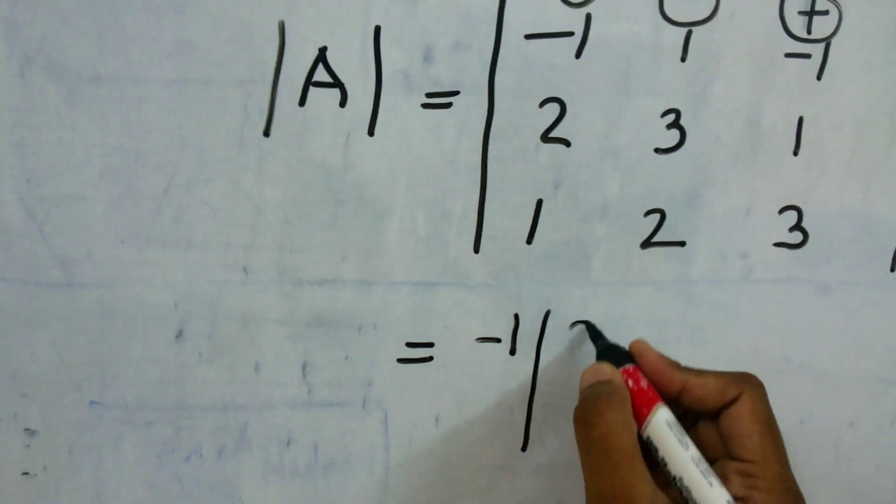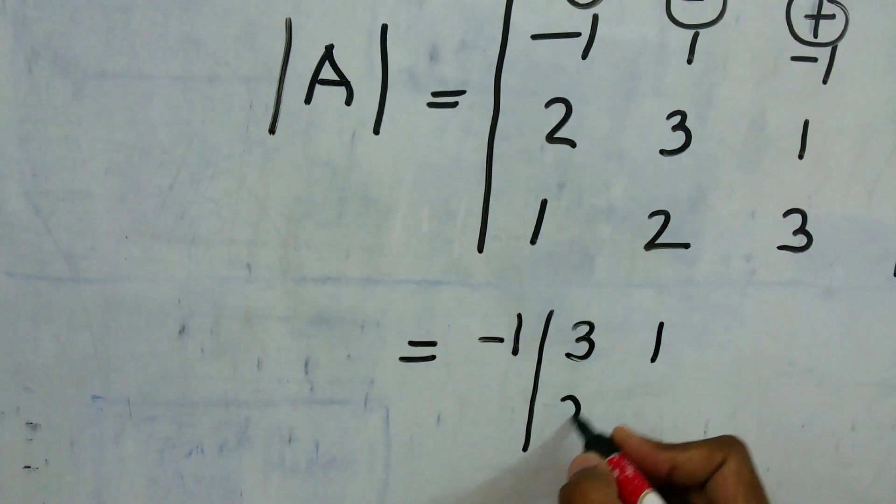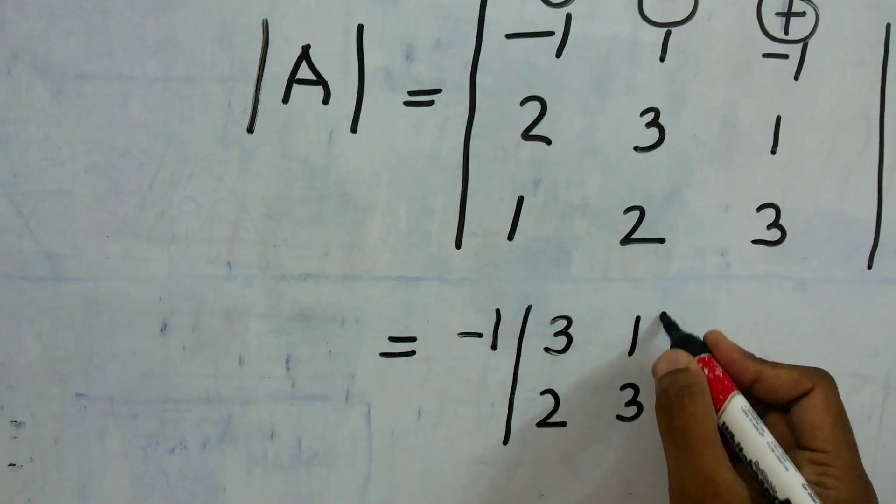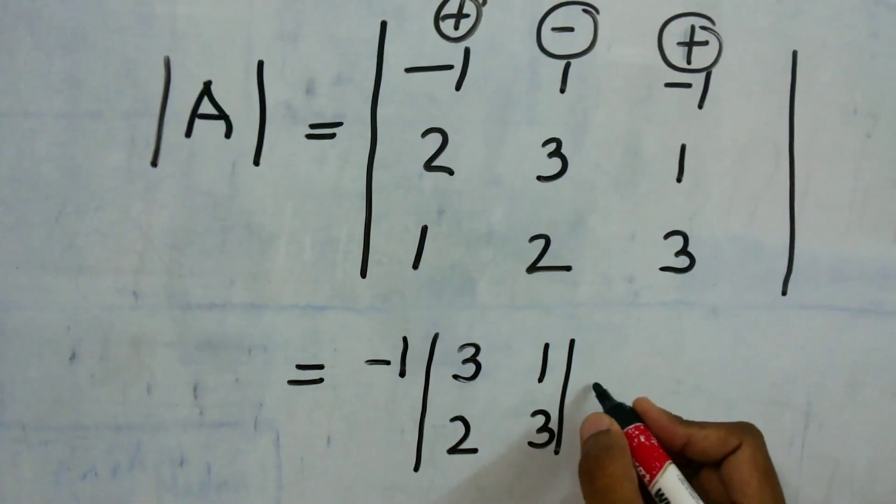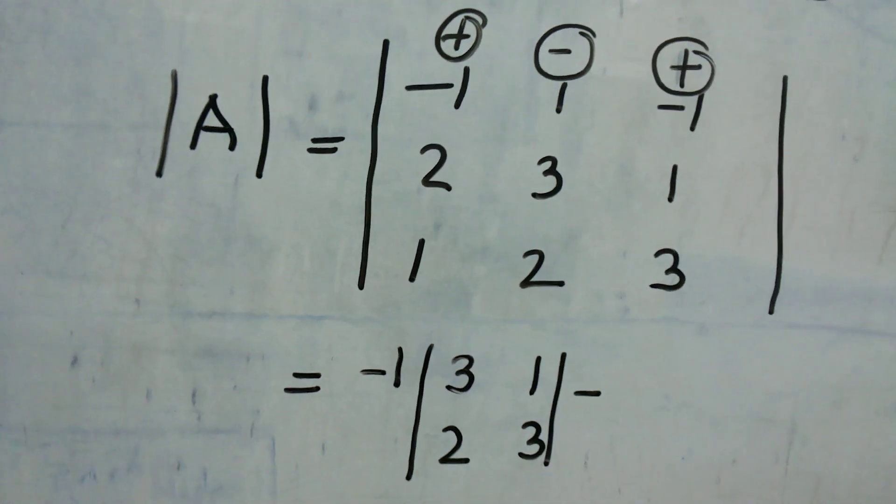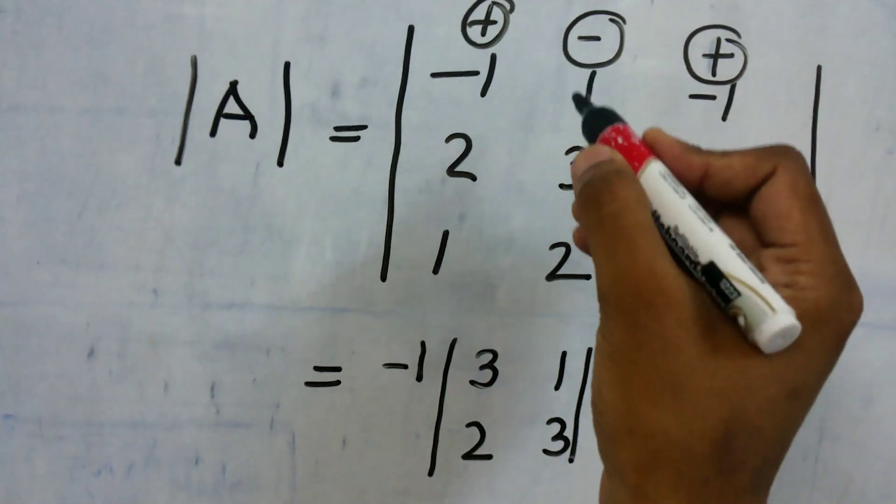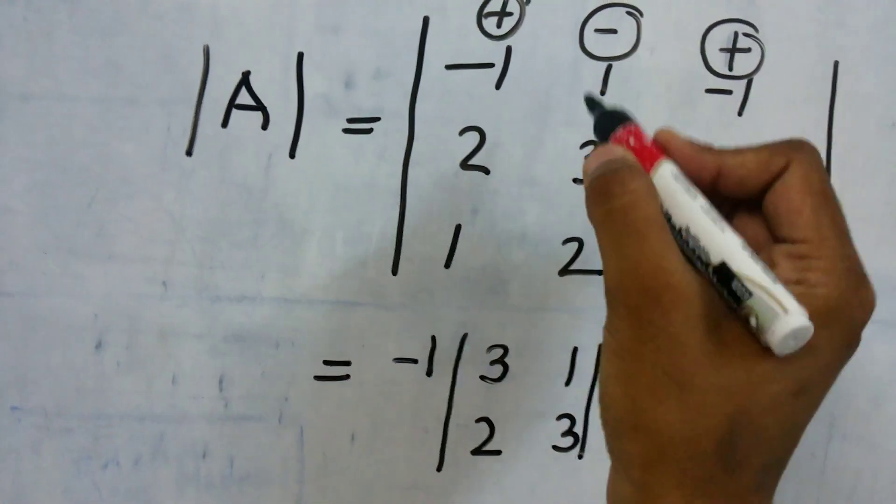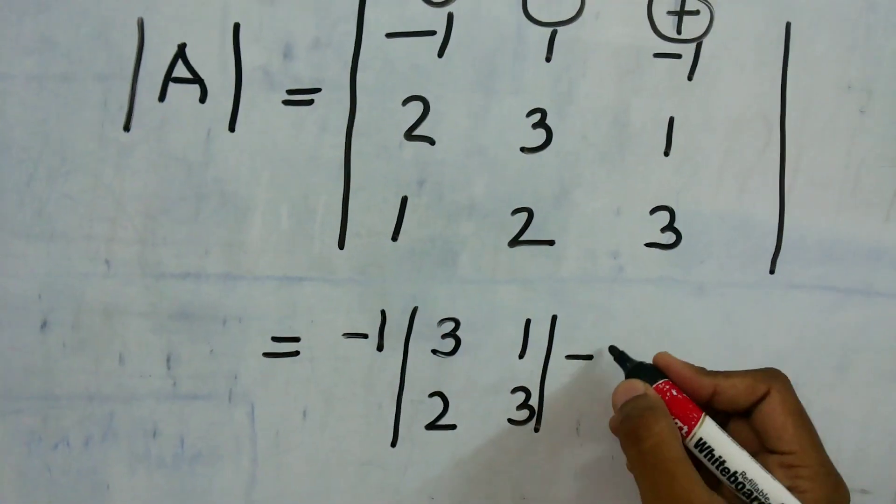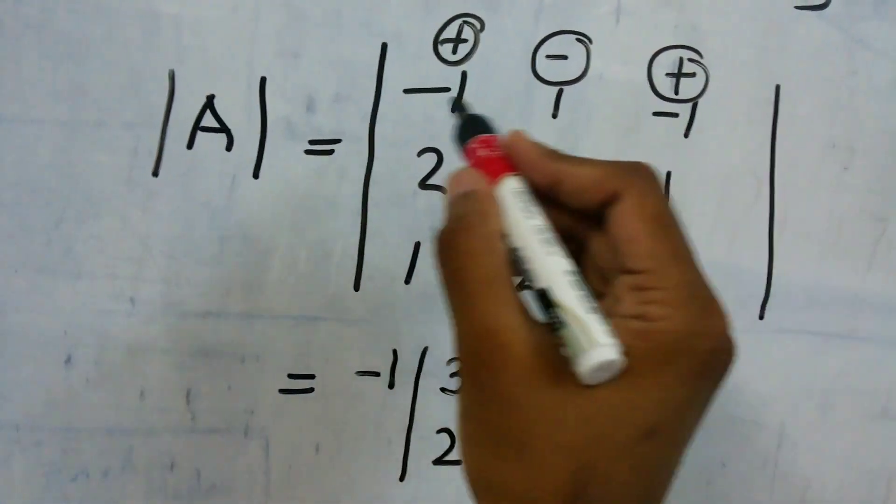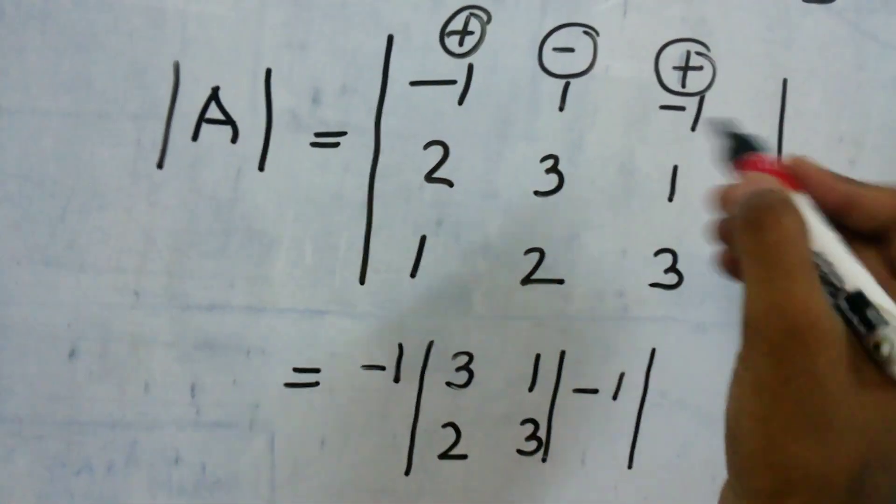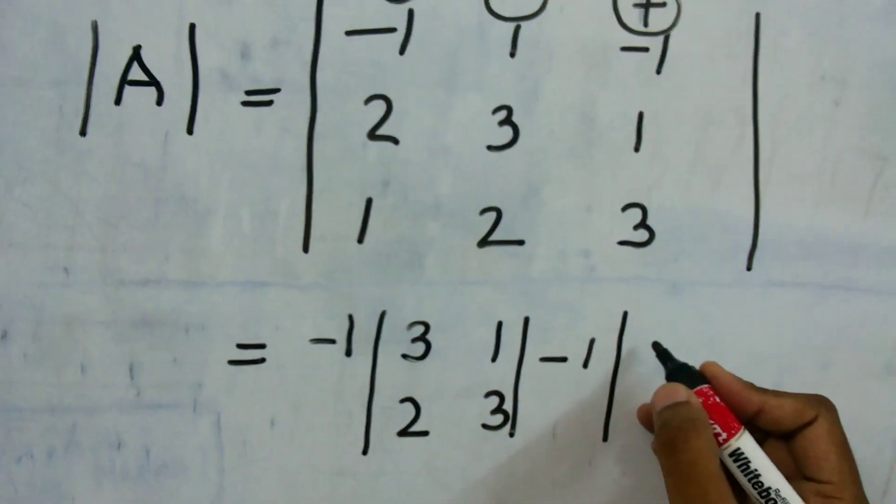That is 3, 1, 2, 3. And then this, as I mentioned, is negative, so we have to take a negative sign over here. So this negative will have effect on the sign of this particular element. So here minus 1. And then we have to neglect or forget about this particular row and this particular column. So remaining elements we have to write it down: 2, 1, 1 and 3.